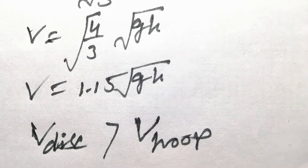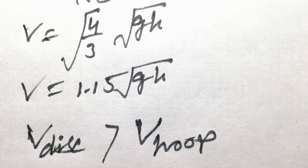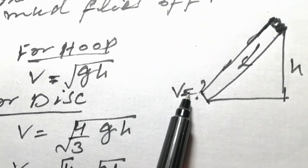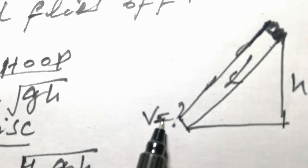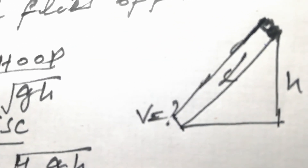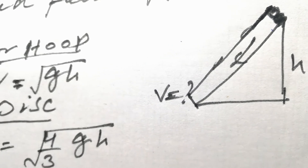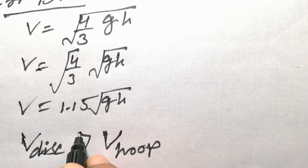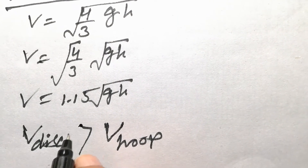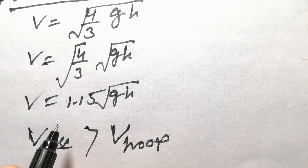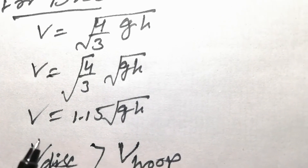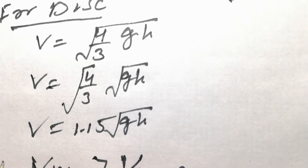Since the velocity of the disk is greater than the velocity of the hoop, the conclusion is that the disk reaches the bottom of the inclined plane earlier than the hoop. That was question number 10.